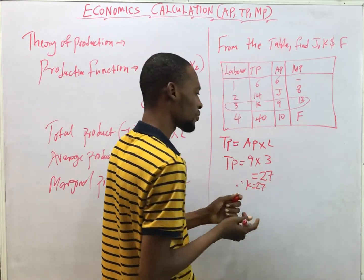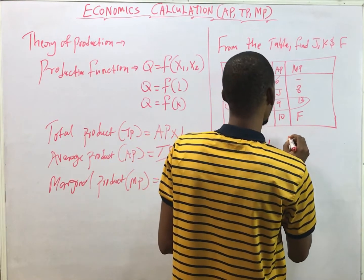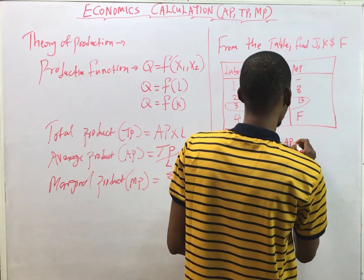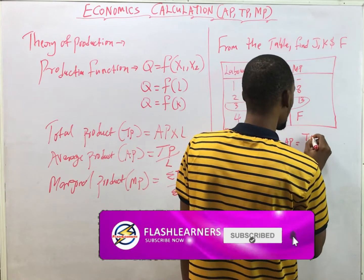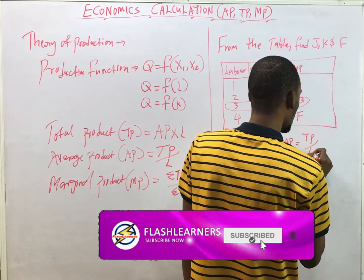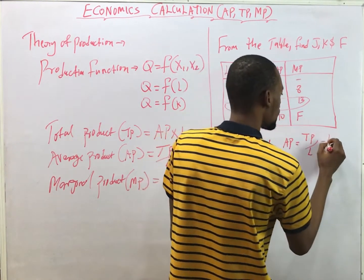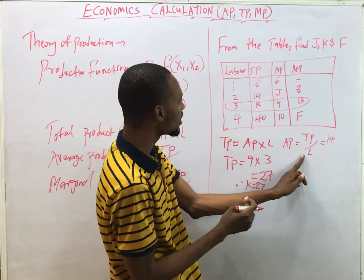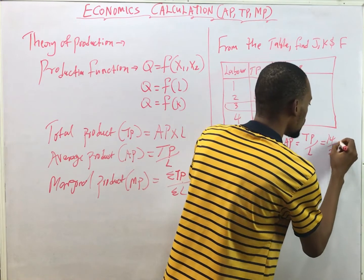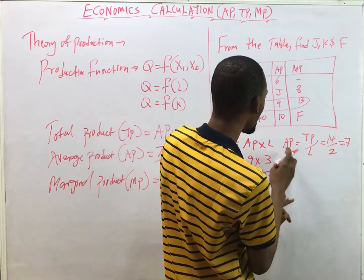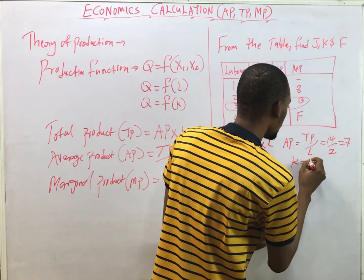Now let's solve for j. Average Product equals Total Product over Labor — TP over L. For this row, Total Product is 14 and L (labor) is 2, so 14 over 2 equals 7. Therefore j equals 7.